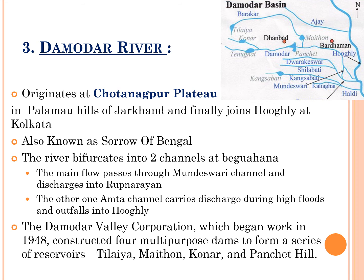The third major right tributary of Ganga river is Damodar river, which originates at the Chhotanagpur Plateau in Palamu Hills of Jharkhand state and finally joins the Hooghly at Kolkata in West Bengal. Damodar river is also known as the 'Sorrow of Bengal'. It bifurcates into two channels: the main flow passes through Mundeshwari Channel into Rupnarayan, and the other is the Amta Channel. The Damodar Valley Corporation, begun in 1948, constructed four multipurpose dams: Tilaiya, Maithon, Konar, and Panchet Hill.